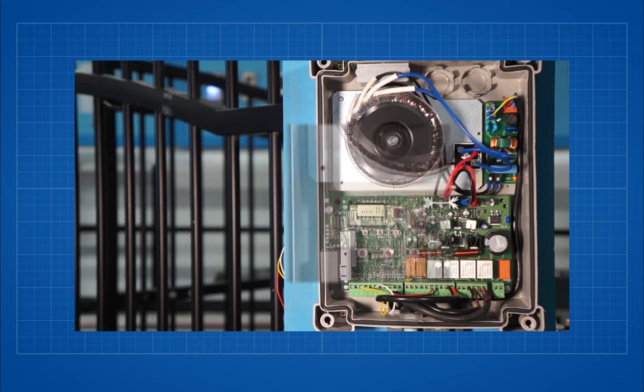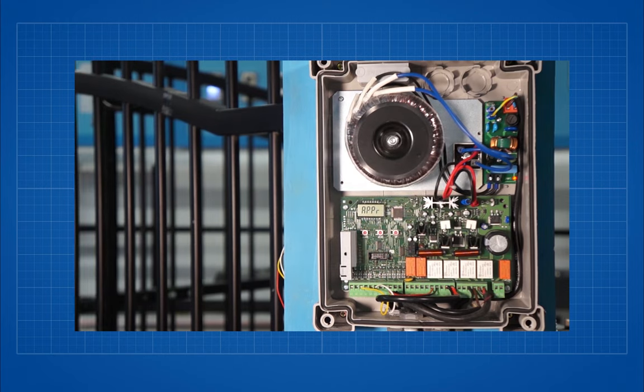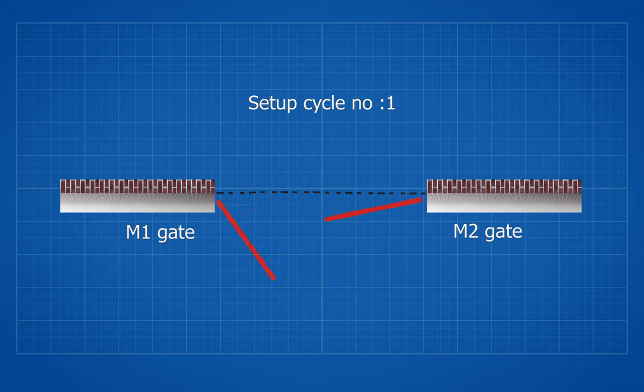First m1 gate should open in cycle one, then m2 gate should close in cycle two. M1 closes in cycle three, both the gates open in cycle four. Lastly both the gates close in cycle five.